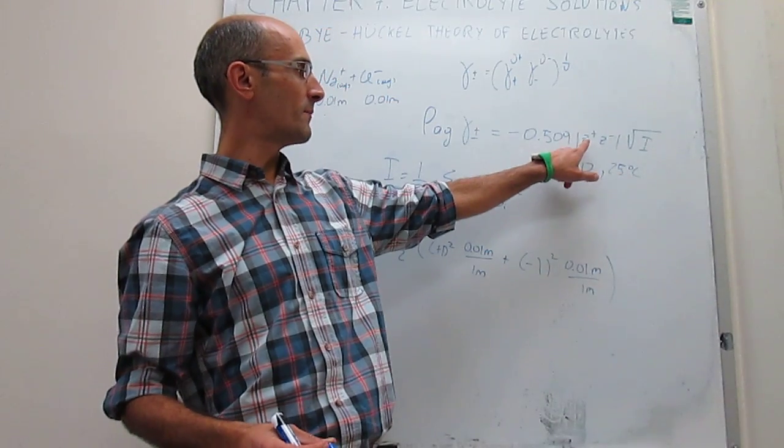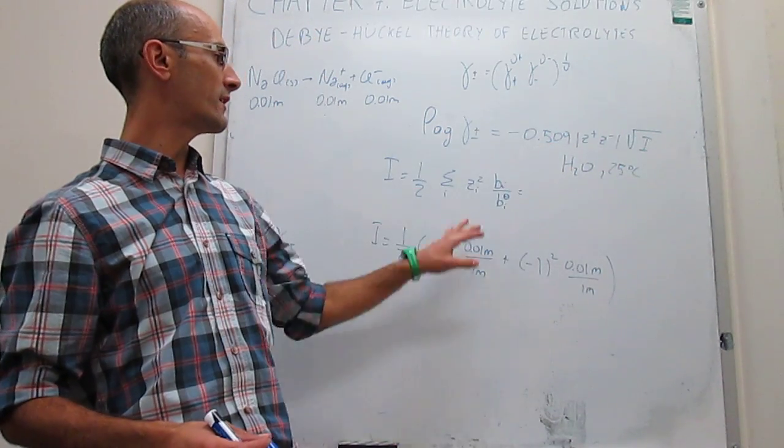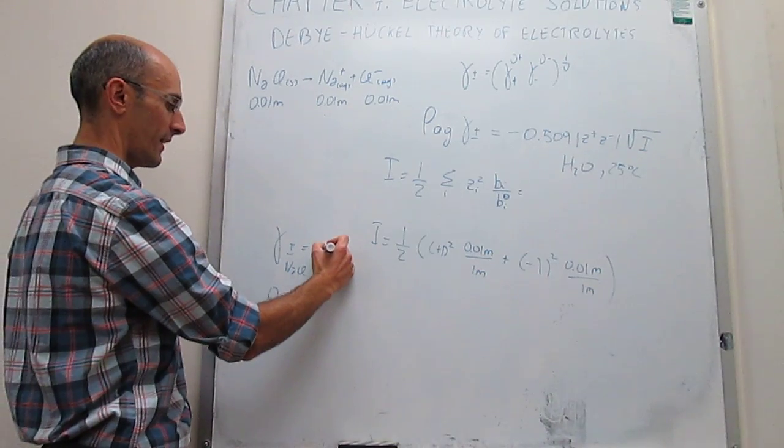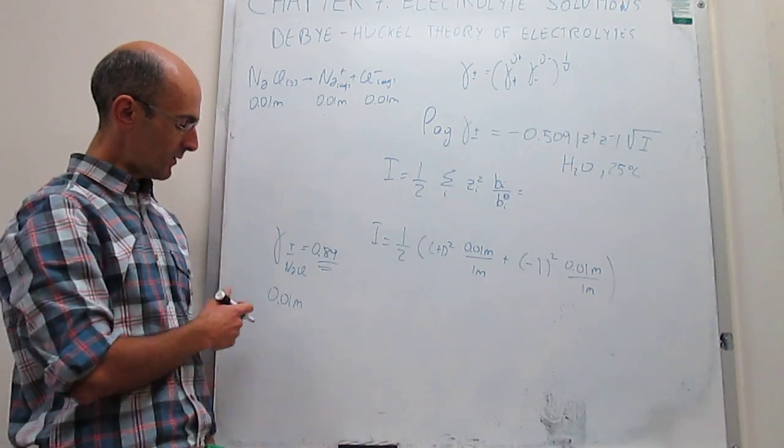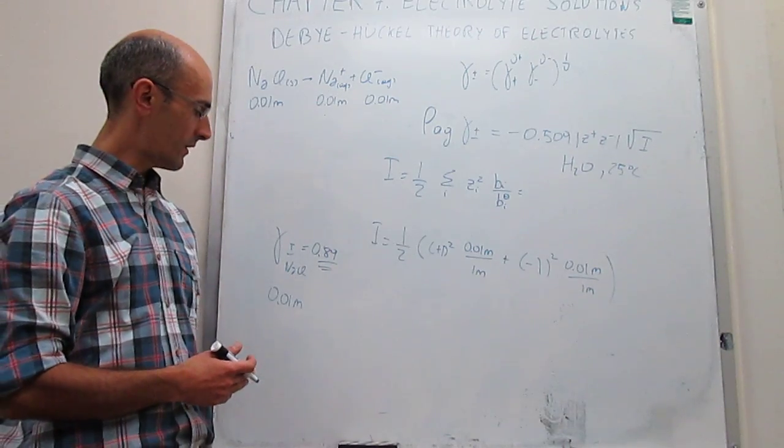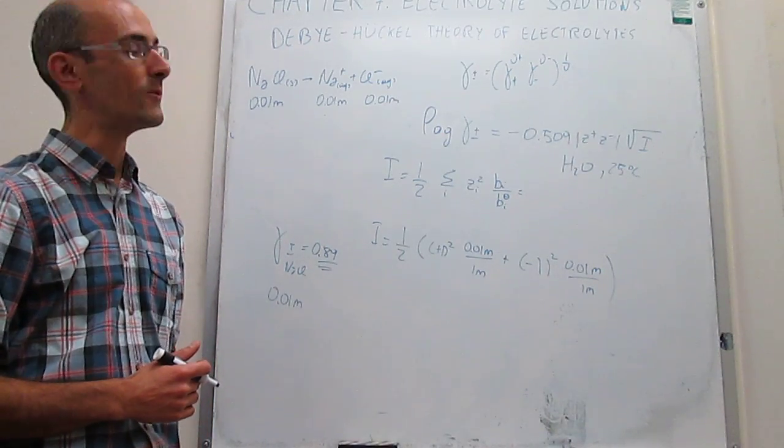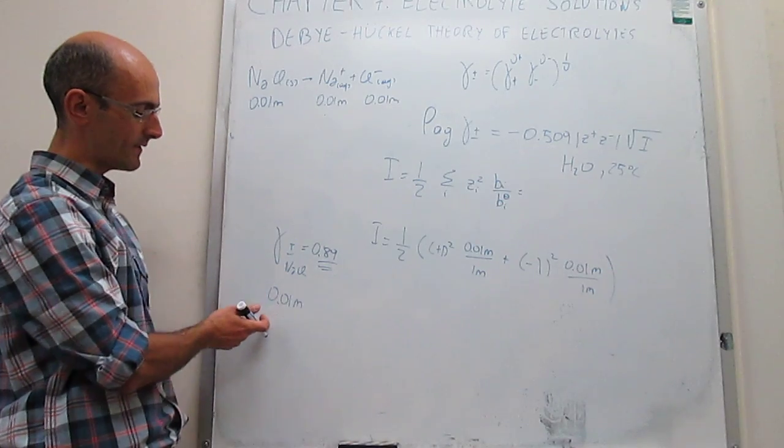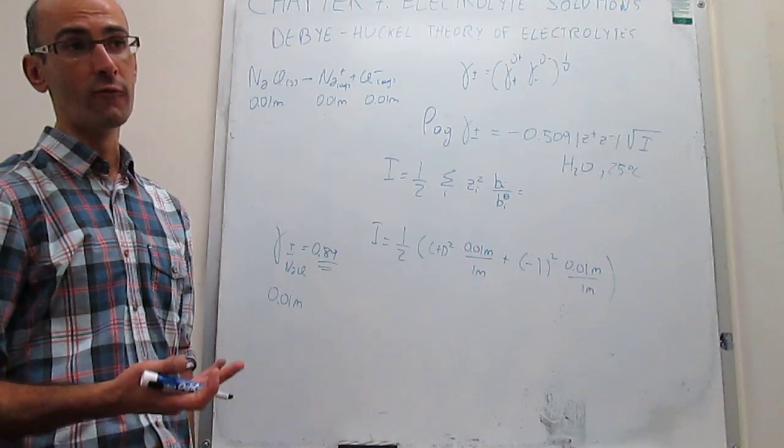Then you would plug it here: that is +1 times -1, absolute value is going to be equal to 1, and then multiply that by -0.519, take the anti-base-10 logarithm, and you find that for this solution this number happens to be equal to 0.89. Which is rather shocking, because this number would need to be 1 for the solution to be ideal. So even at this dilute concentration, where you have 5,000 water molecules for each sodium plus and chloride minus ion, that solution is actually not ideal. You have about an 11% deviation from ideal behavior. That tells you that it is very difficult to get ionic solutions that are very ideal. You have to make this concentration very small before you start to get activity coefficients that are very close to 1.